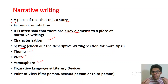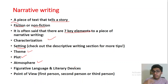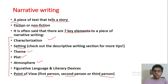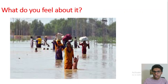Then figurative and literary devices — the use of metaphors, similes, personification, consonance, assonance, and imagery — which beautify and decorate the language. The last element of a narrative is point of view: it can be the first person, second person, or third person point of view. These seven elements are very important. Examples of narrative writing include short stories, autobiographies, and historical texts.